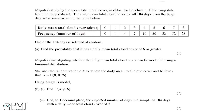Looking at the table that summarizes the data, if it has a cloud cover of 6 or greater, it has to be 6, 7, or 8. Adding up the corresponding values, we get 52 plus 52 plus 28, which equals 132. So that's 132 days out of the total of 184 days, giving us 132 over 184. That simplifies down to 33 divided by 46, which is our final probability.